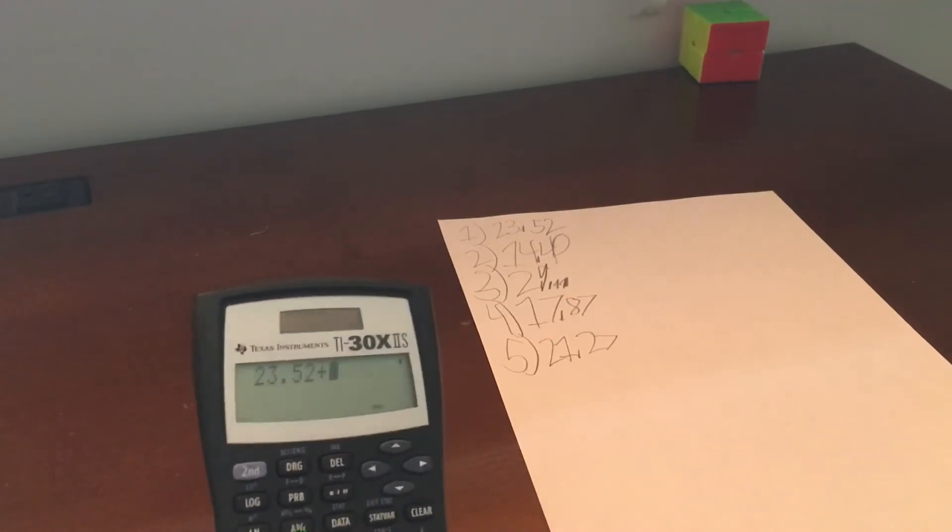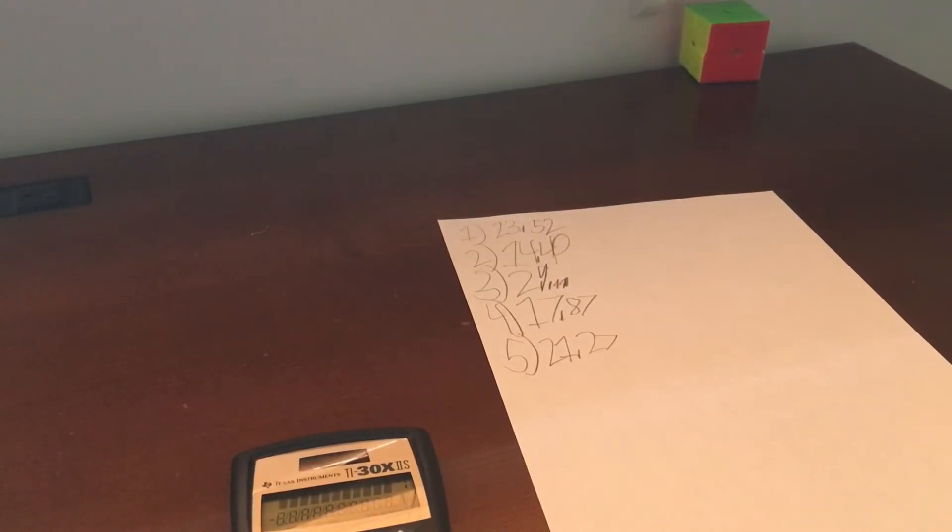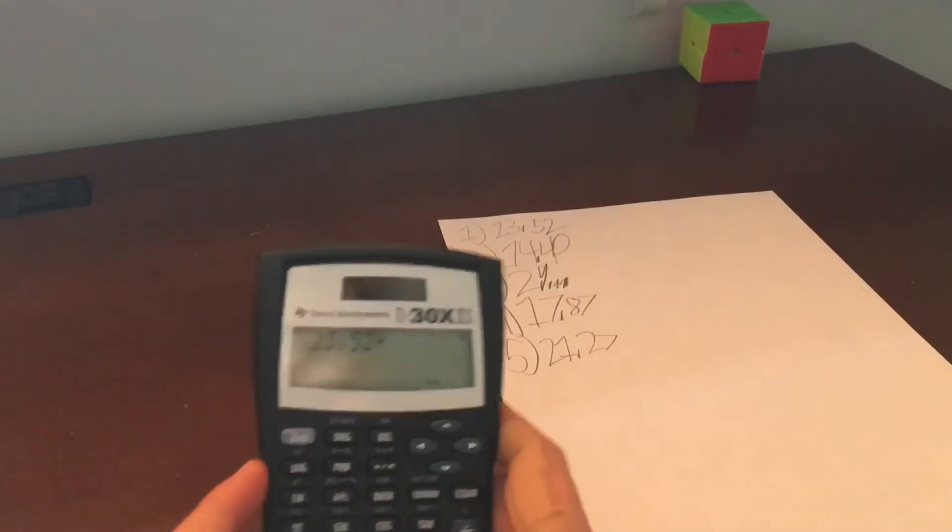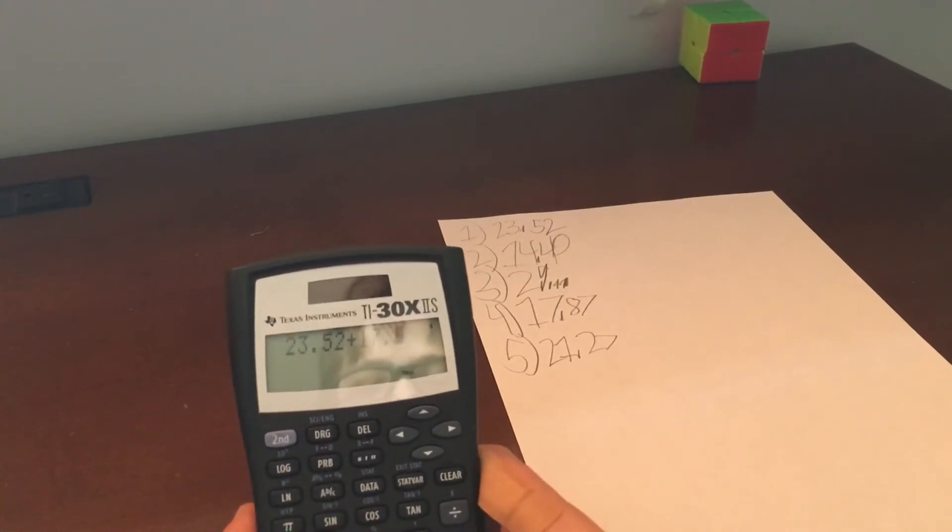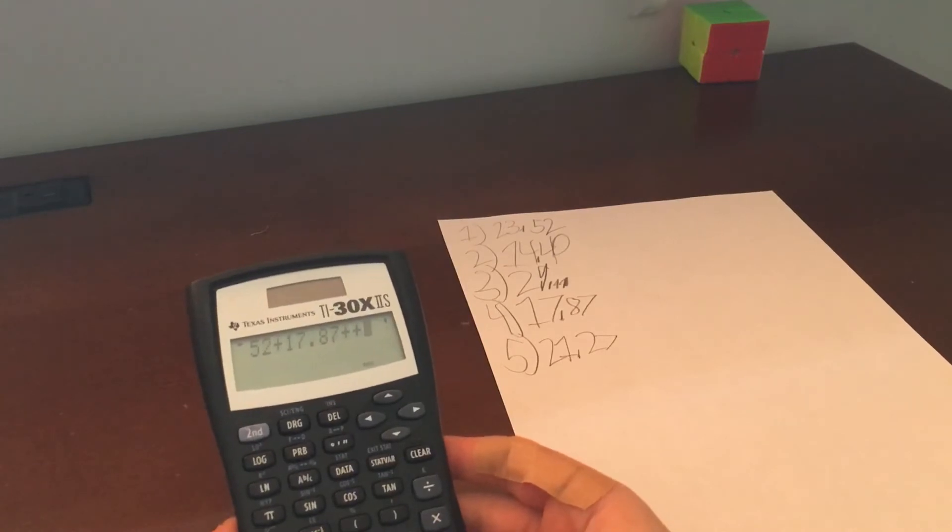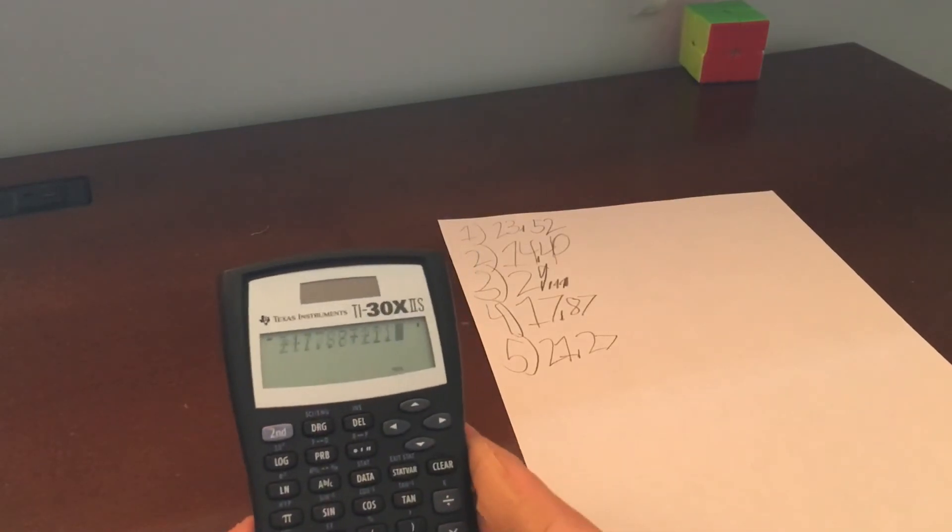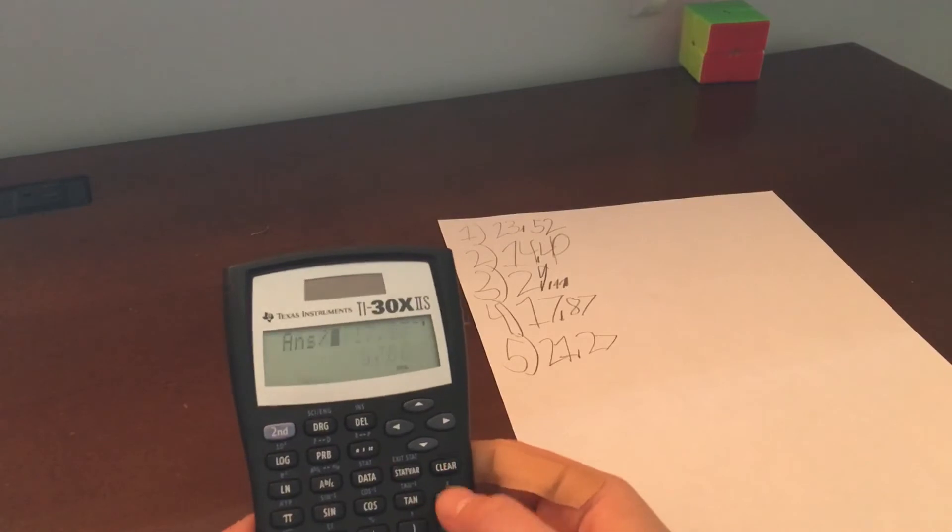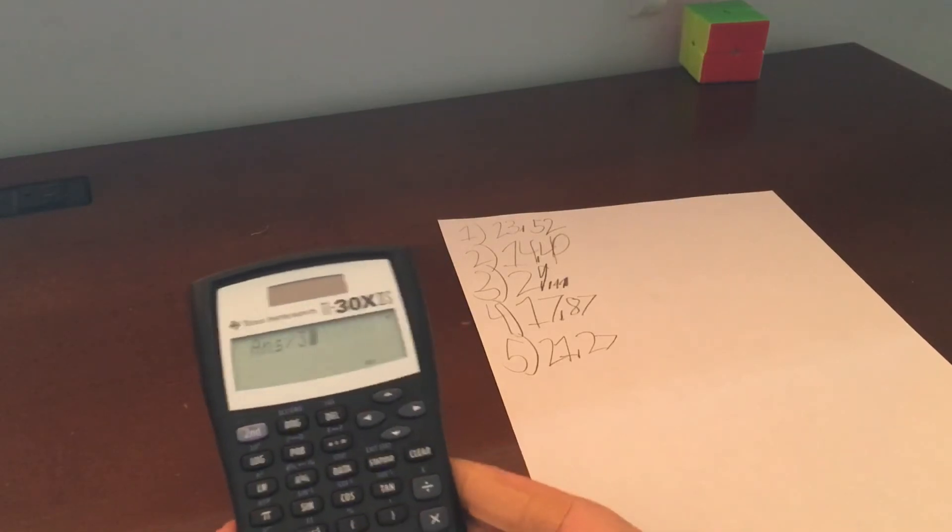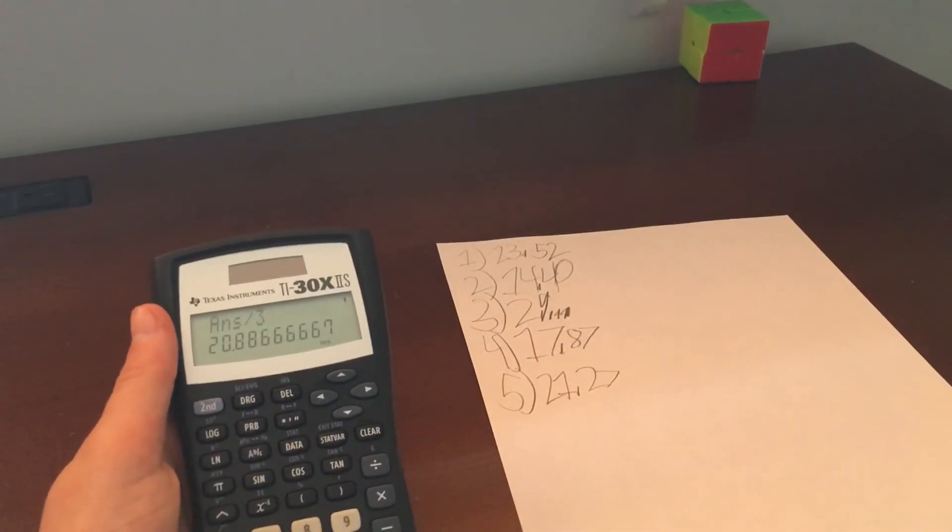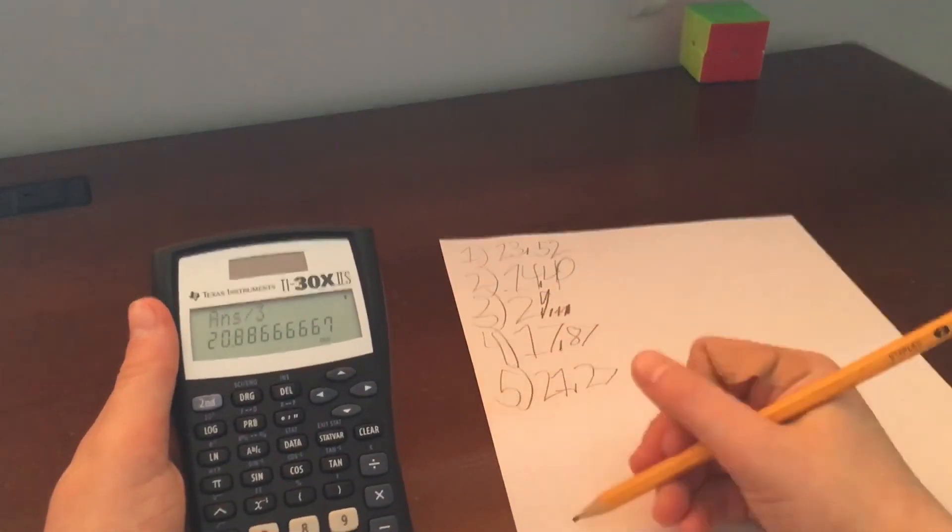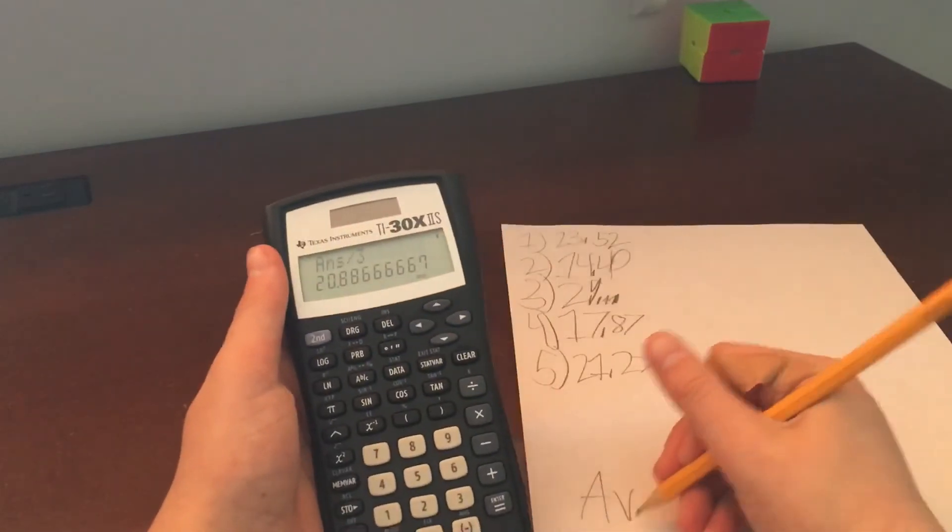Okay, now the calculator, I can add these up. 23.52 plus, because as you know already, you average, you get the average of the middle three times. 23.52 plus 17.87 plus 21.27, and then divide that by 3.